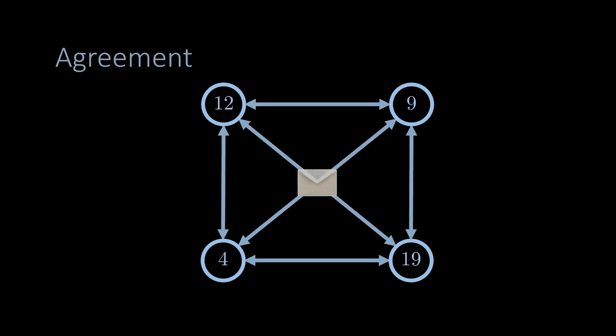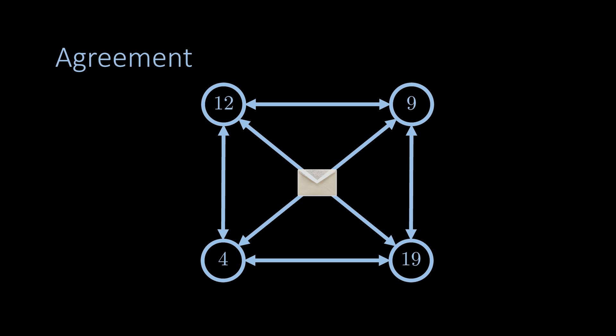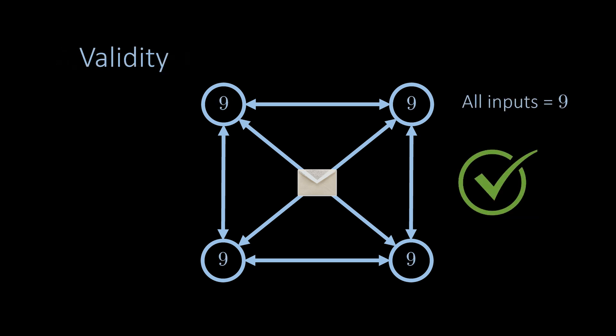The more formal definition goes as follows. We say that an algorithm solves the consensus problem if it has three properties. The first property is called agreement, which says that all nodes must decide on the same value at the end of the execution. The second property is called validity: the algorithm has the validity property if the nodes decide on a value that is the input value of a node — that is, one node must have had this value at the beginning of the execution.